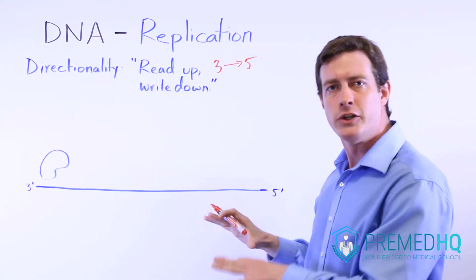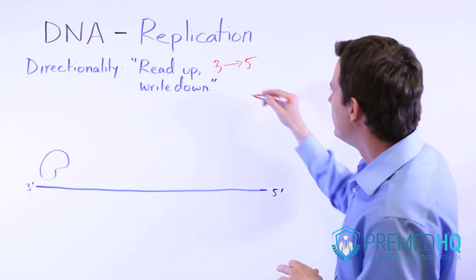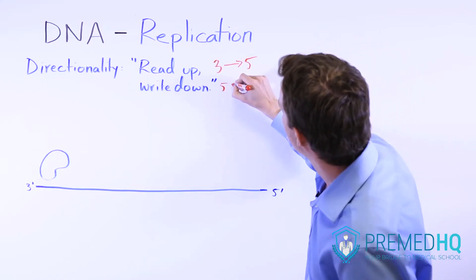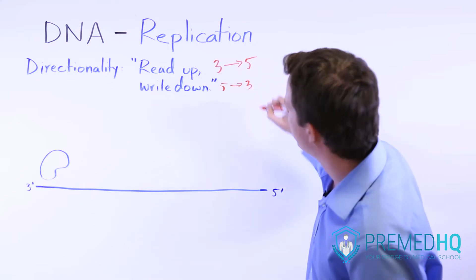But when it writes a new strand, when it writes a duplicate of this template strand, it writes in the downward direction. So it builds it from five to three.